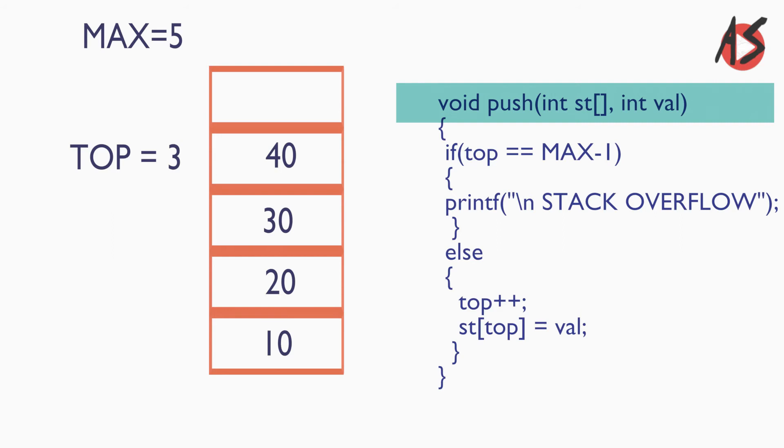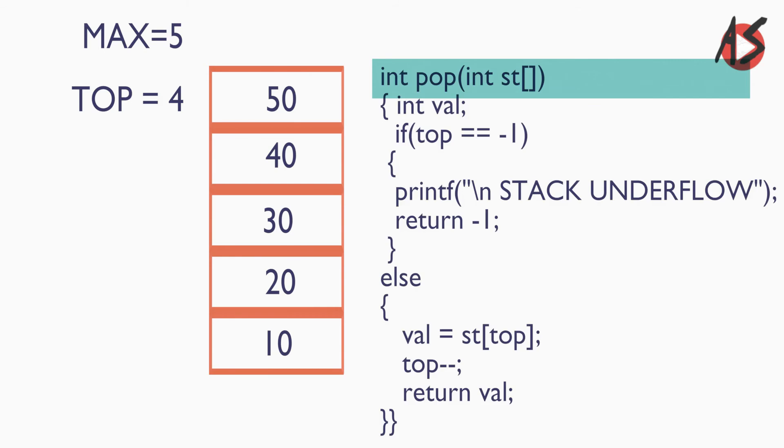Similarly we add 50 in the fourth place of the stack, top will be incremented to 4. Now if we want to insert one more element in the stack, it will check the condition. Top equals max minus 1, and since top is now 4, the condition becomes true and we get stack overflow message. And we can't insert any more elements.